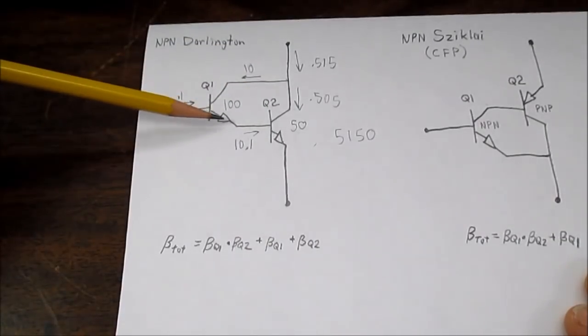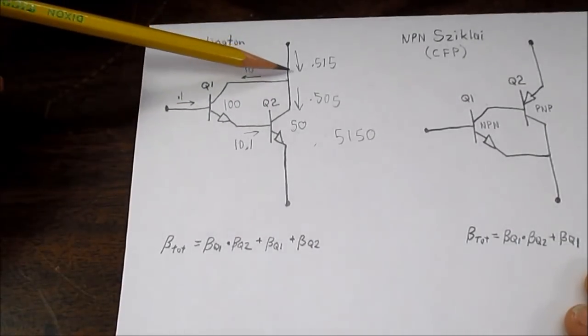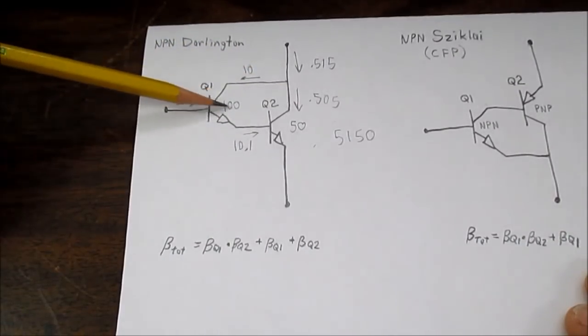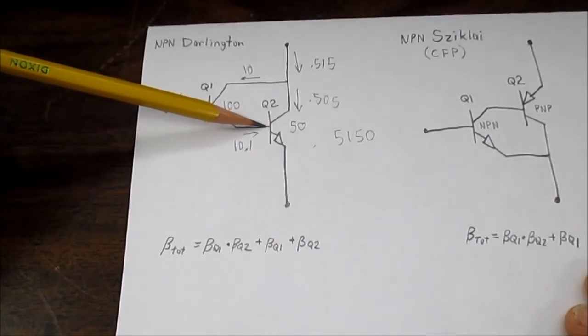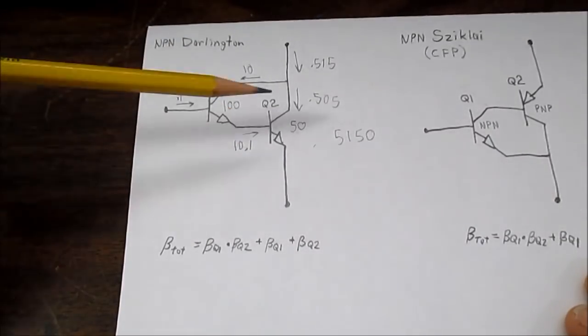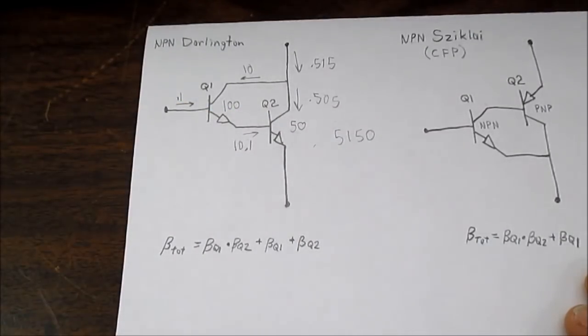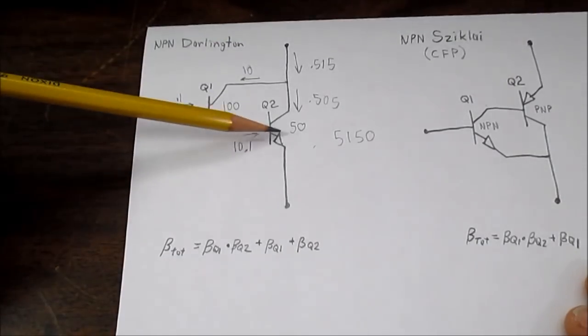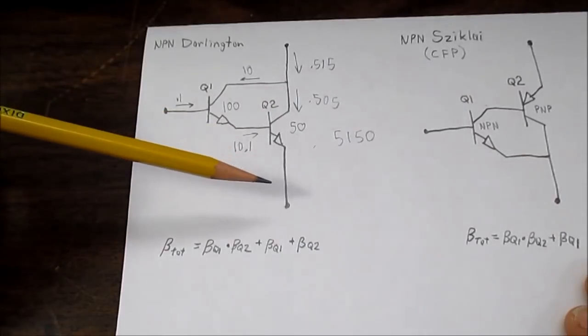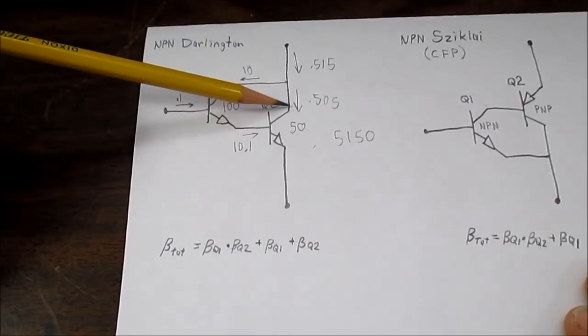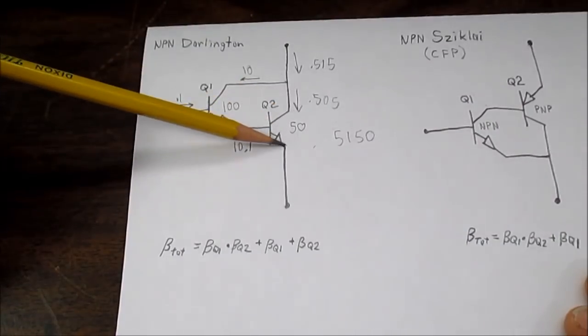But in the Darlington configuration, you need to have current going this way with this transistor in order to turn this second transistor on. So because of that, this transistor Q2 cannot go into saturation. And that might be helpful because large power transistors are somewhat slow coming out of saturation, so it could be beneficial there. But you also have to watch out.